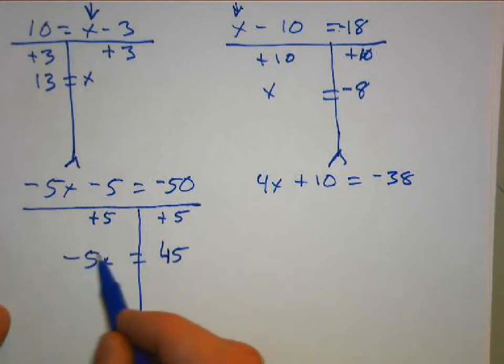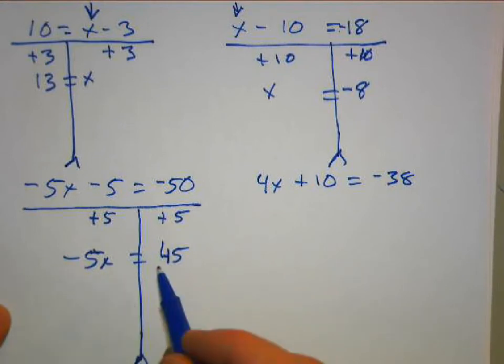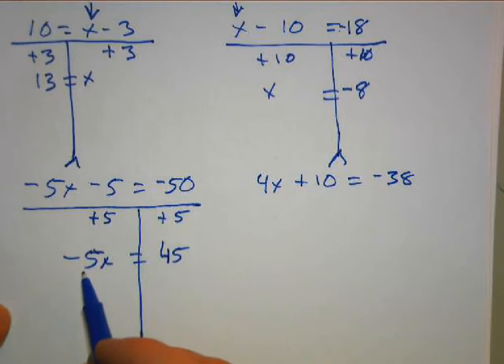So negative 5X equals 45, and this negative 5 is attached to the X through multiplication. And when it's attached to the X through multiplication, we need to undo that multiplication with division.